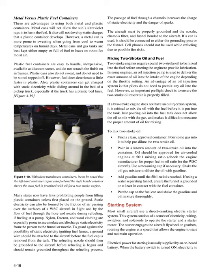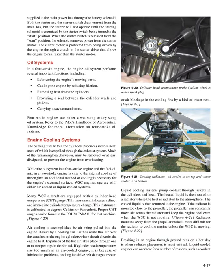Starting system: most small aircraft use a direct cranking electric starter system consisting of a source of electricity, wiring, switches, solenoids, and a starter motor. The starter engages the aircraft flywheel or gearbox, rotating the engine at a speed that allows it to start and maintain operation. Electrical power for starting is usually supplied by an onboard battery. When the battery switch is turned on, electricity is supplied to the main power bus through the battery solenoid; the starter will not operate until the starting solenoid is energized by the starter switch being turned to the start position. The starter motor is protected from being driven by the engine through a clutch in the starter drive.